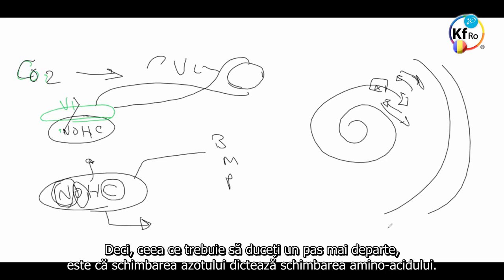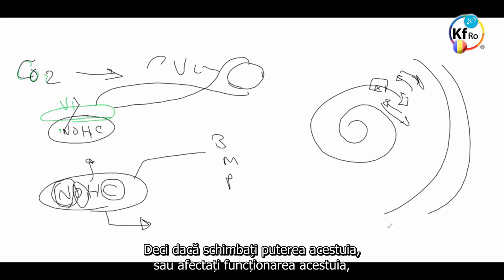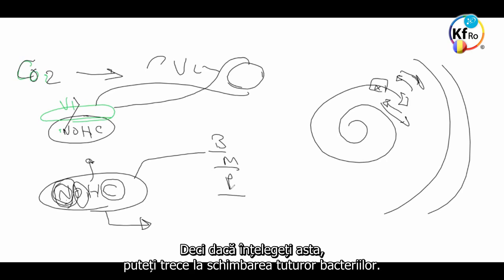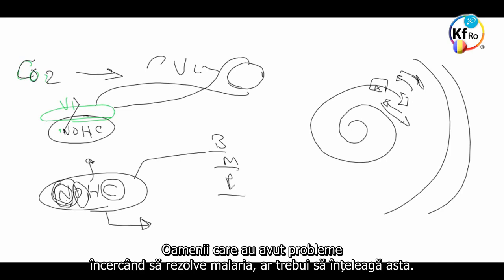So what you need to take a step further is the change of Nitrogen dictates the structure of the amino acid. So if you change the strength of this, or affect the operation of this, you can handle anything which is amino acid based. So if you understand this, you can go in changing all the bacterias. People who had a problem with solving Malaria should understand this.